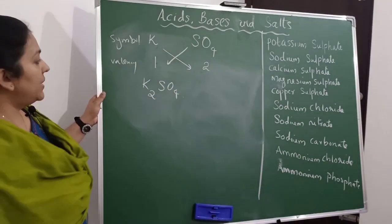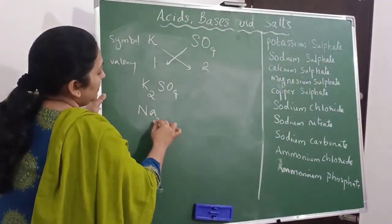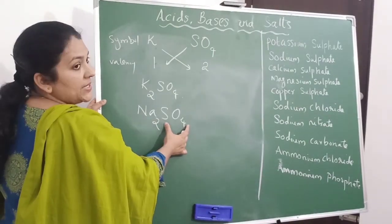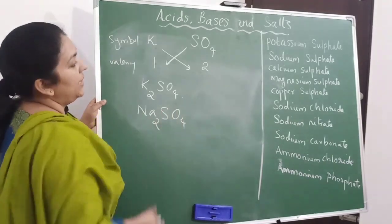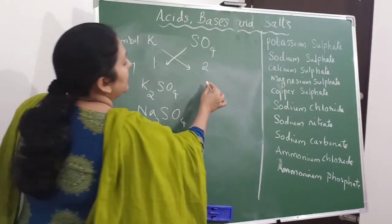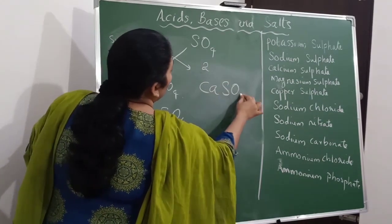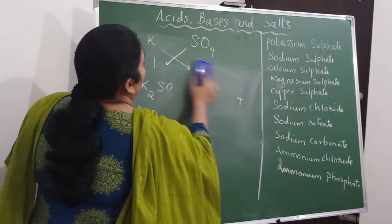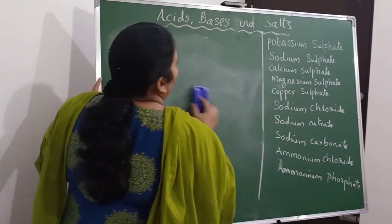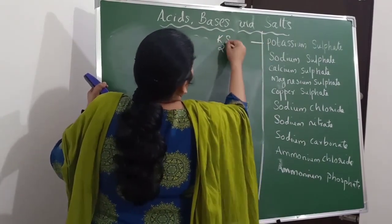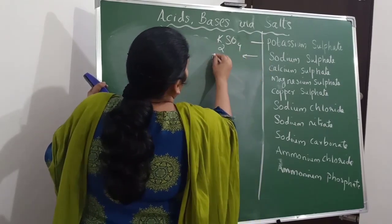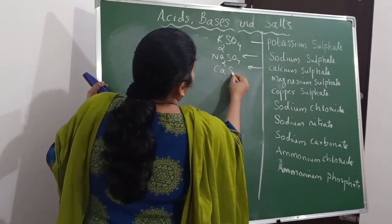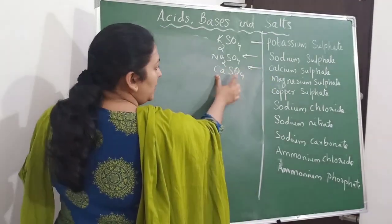Sodium sulfate is Na2SO4 because sodium has valency 1 and sulfate has valency 2, so we exchange the valencies. Calcium sulfate: calcium has valency 2 and sulfate also has valency 2, so we write CaSO4. Magnesium sulfate: magnesium has valency 2 and sulfate also has valency 2, so MgSO4. Copper sulfate: copper shows variable valencies as it is a transition element, but normally valency is 2, so CuSO4.